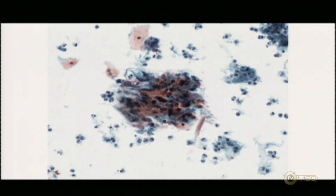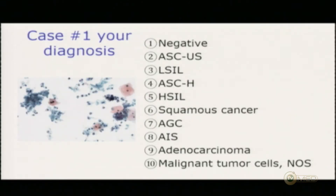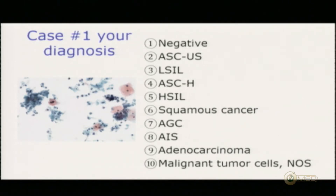So now, very quickly, my question is: what's that case? What's the diagnosis of that case? Who is going to call it negative? Nobody. Who is going to call it ASCUS — undetermined — nobody. Who is going to call it low cell? Who is going to call it low cell with these large cells and binucleation, nobody?